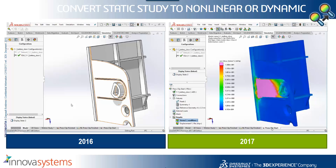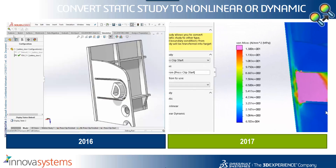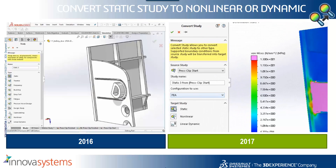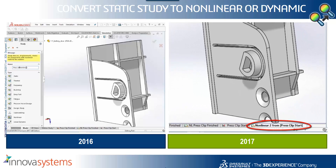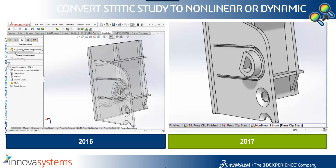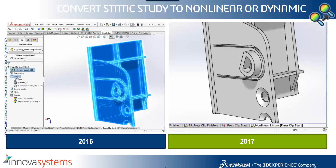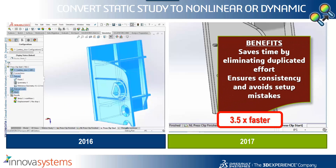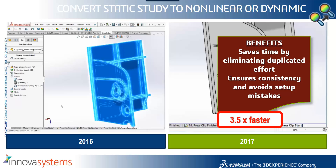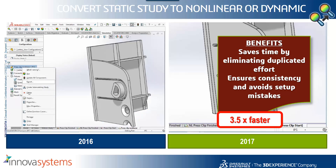We also saw how we can convert static studies to non-linear by using the new copy study option and then specifying the target study as non-linear. In previous releases we'd have needed to create a non-linear study and then drag and drop each of the conditions from our original study across into the new one. So we've certainly gone from a number of clicks down to a couple of clicks — a much faster process — and it also eliminates quite a lot of errors because the duplication happens by the system.